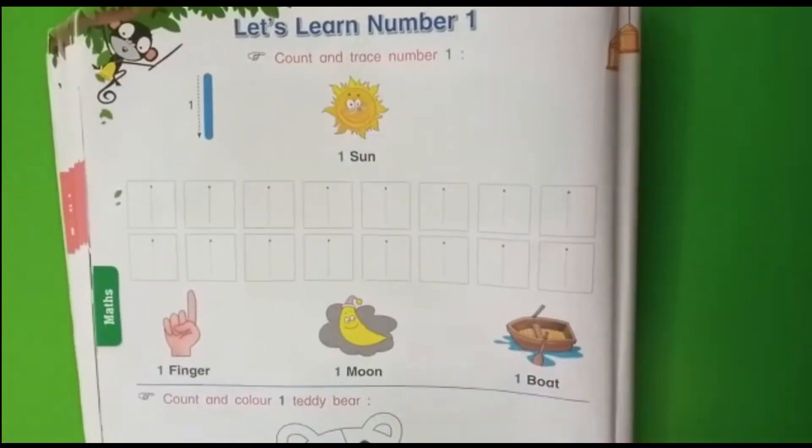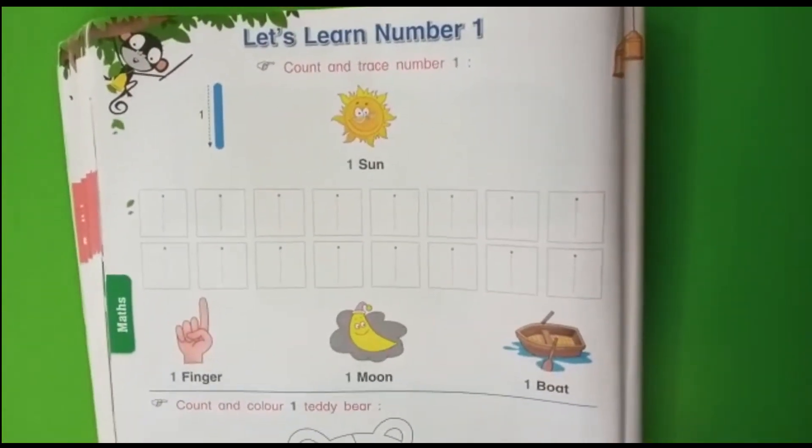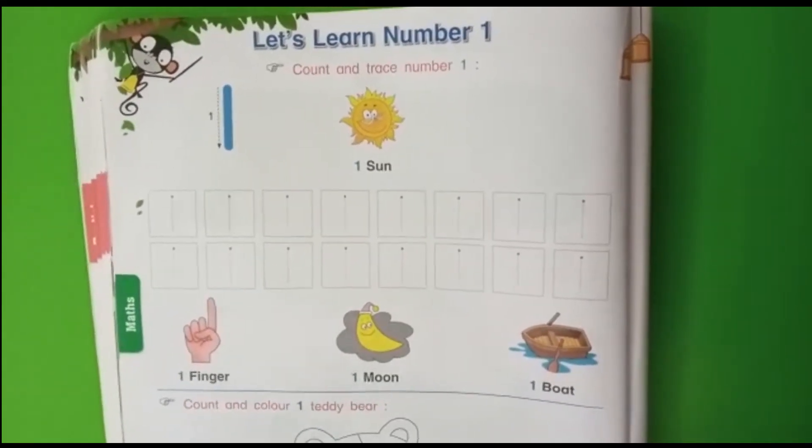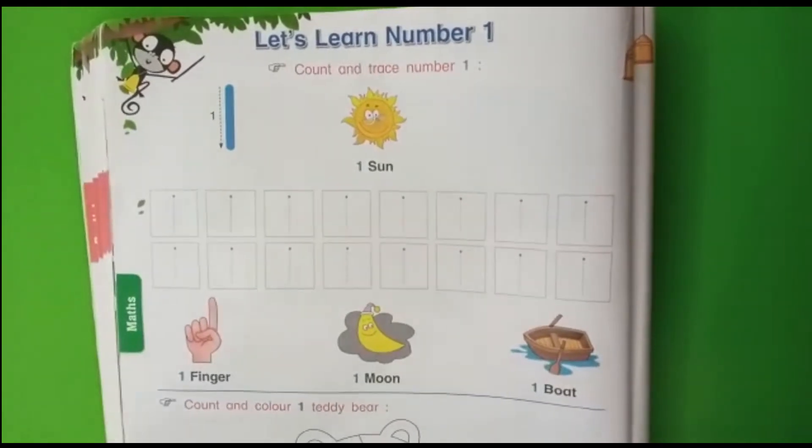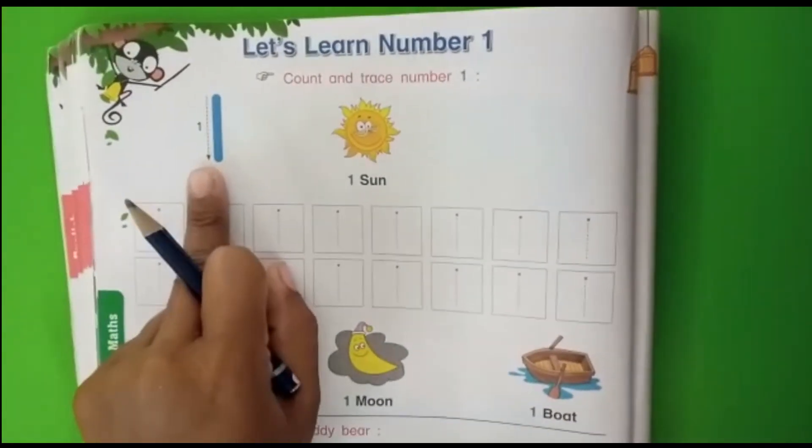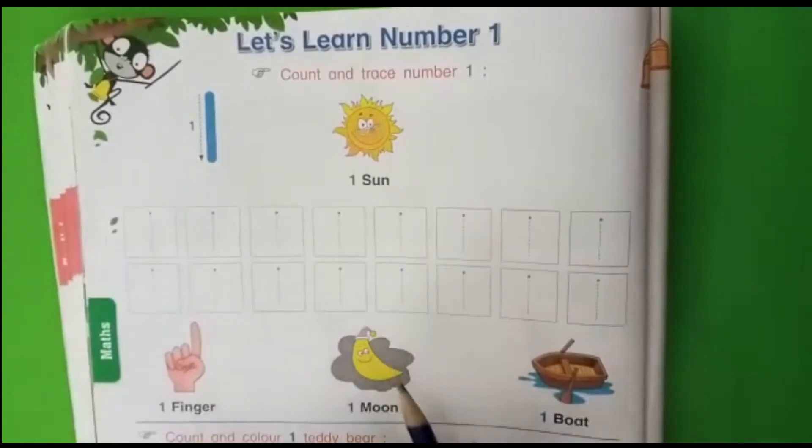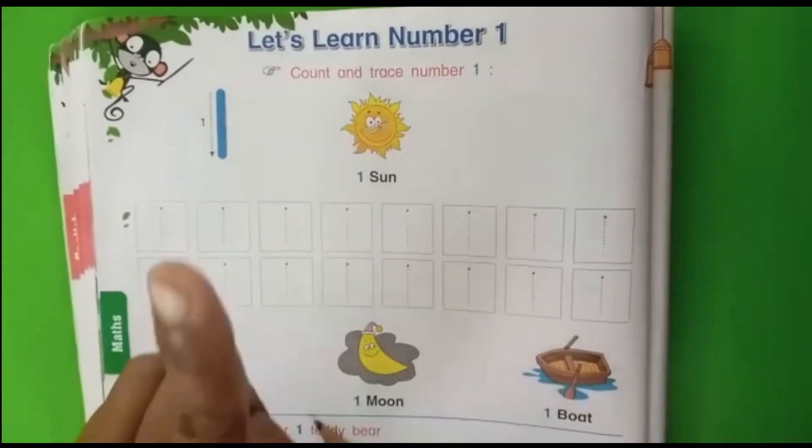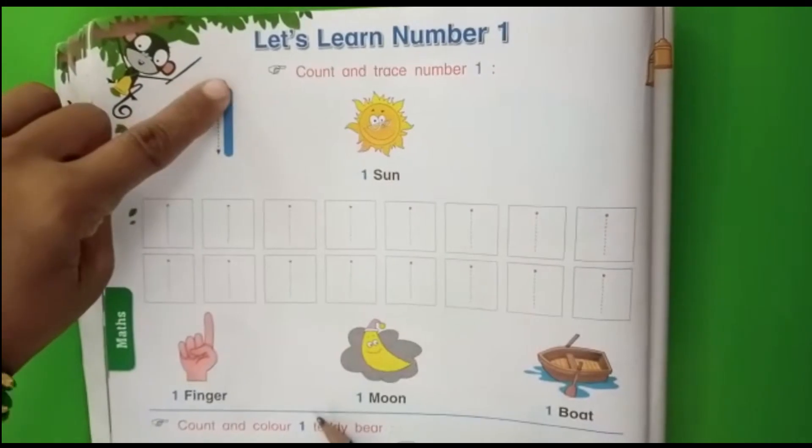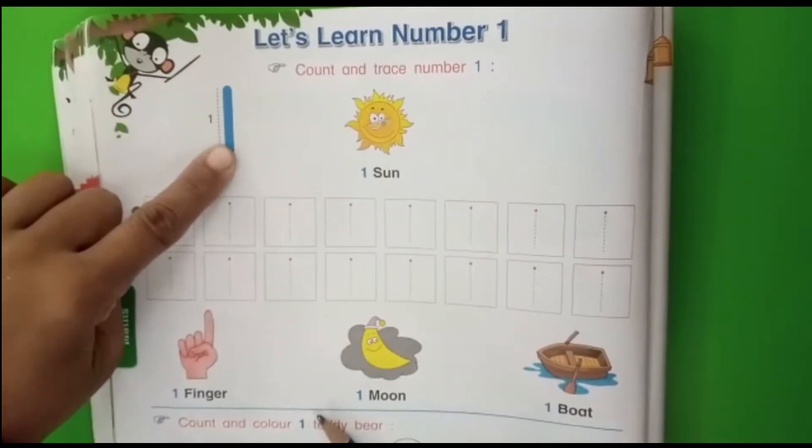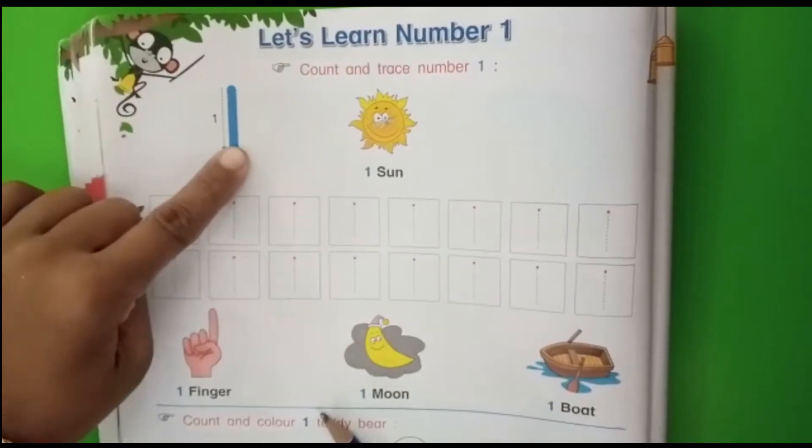Now children see here, textbook number 1, page number 48. On page number 48 you can see here, which is this number? This is the 1. First, all of you take your index finger and trace the number 1 like this.